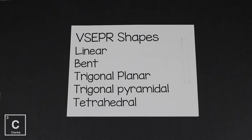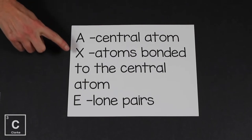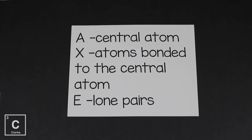These are the shapes we're going to learn: linear, bent, trigonal planar, trigonal pyramidal, and tetrahedral. Before we dig into these shapes, one more thing we need to be straight on — I'm going to use some letters as a general formula. Anytime you see the letter A, that's the central atom. Anytime you see X, this represents atoms bonded to the central atom. And anytime you see E, that's the lone pairs.